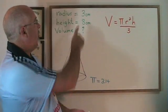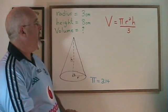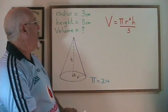In this first example, we have a radius of 3 centimeters, a height of 8 centimeters, and we're looking for the volume.